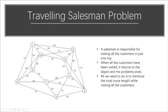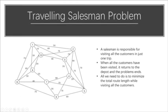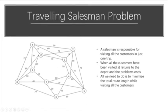When all the customers have been visited, it returns to the depot and the problem ends. All we need to do is to minimize the total route length while visiting all the customers.